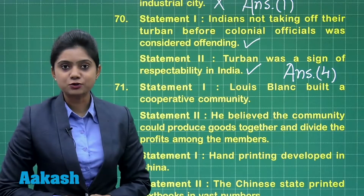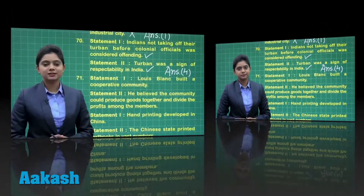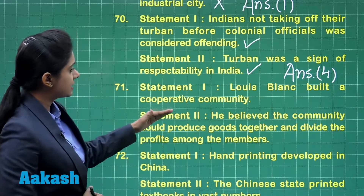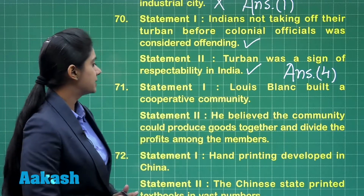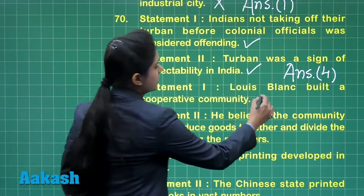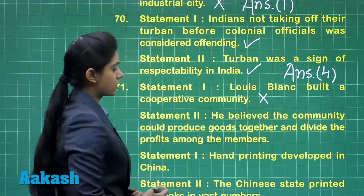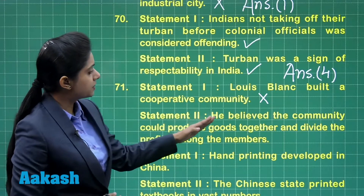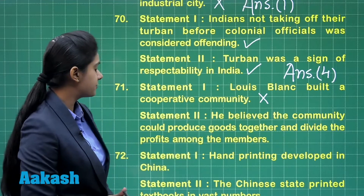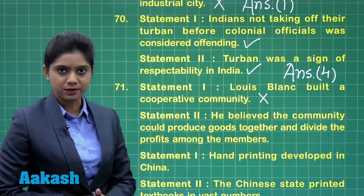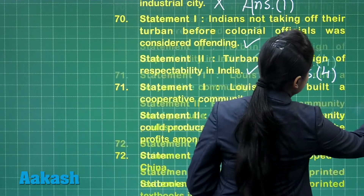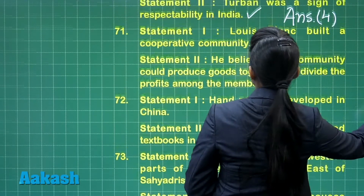Question 71: The first statement says Louis Blanc built a cooperative community — this is an incorrect statement. The second statement says he believed the community could produce goods together and divide the profits among the members — this is the correct statement. So the answer here is option number two.